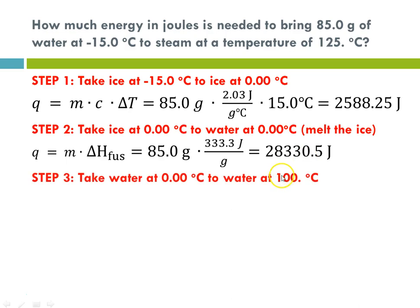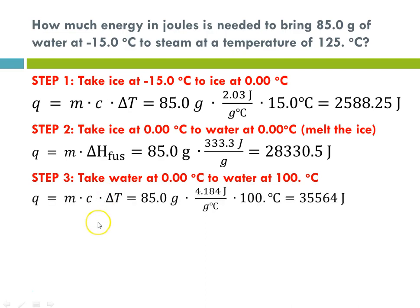Step 3: we've turned the ice to water, and now we take water from zero to 100 degrees C. Our delta T is 100 degrees C. Since we have delta T, the equation is Q equals M times C times delta T. M is 85 grams, C for liquid water is 4.184 joules per gram degree C, and delta T is 100. Plugging that in, Q equals 35,564 joules.